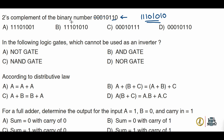Option B is the correct answer. To summarize the shortcut for finding two's complement: write the number from the right side until you get a one, then after that one, invert every remaining number.